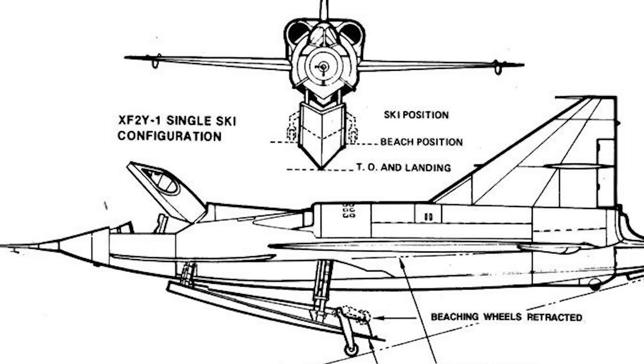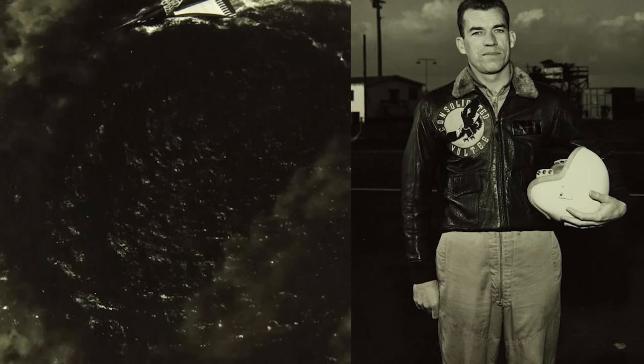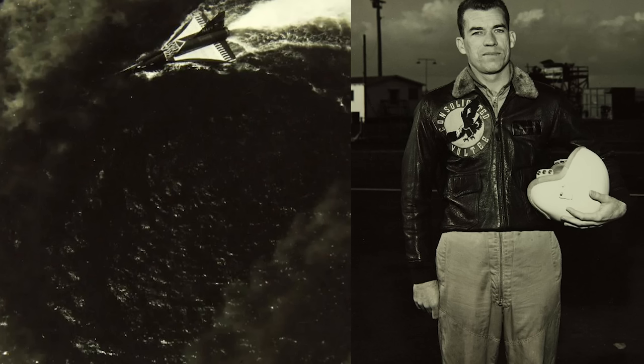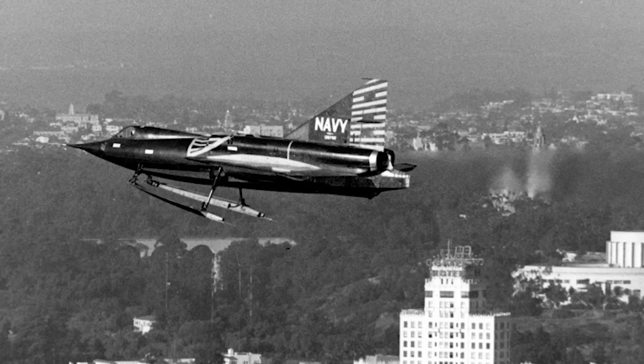Additionally, the afterburning Westinghouse J45 was now available, and there was little point in completing the second prototype as it was designed for the less powerful J34. Around this time, another test pilot, Charles Richburg, joined the Sea Dart programme, and along with Shannon he spent the rest of 1953 being slowly battered upon the waves of San Diego Bay until the arrival of the next Sea Dart.